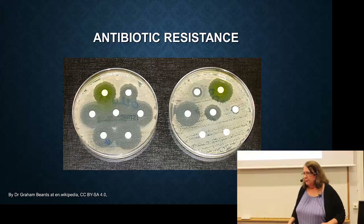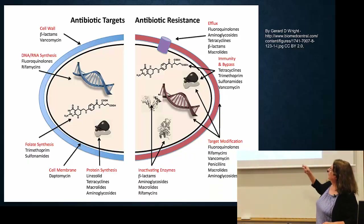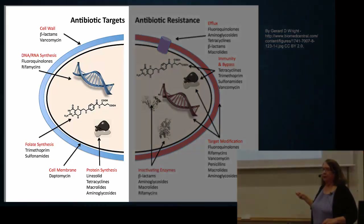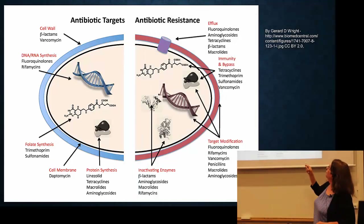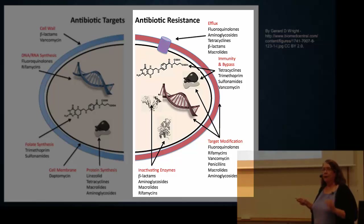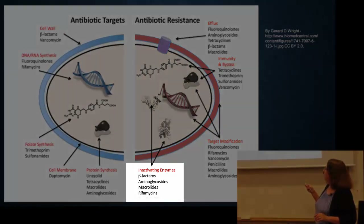As far as mechanisms of antibiotic resistance, it can be complex. On the left side here are shown all the targets for antibiotics that I've already described. On the right side are the antibiotic resistance mechanisms, and there are four of them: efflux, immunity and bypass, target modification, and inactivating enzymes.